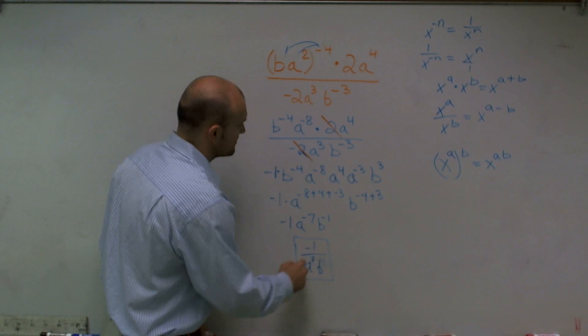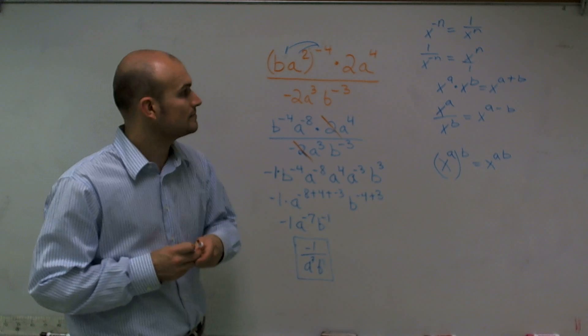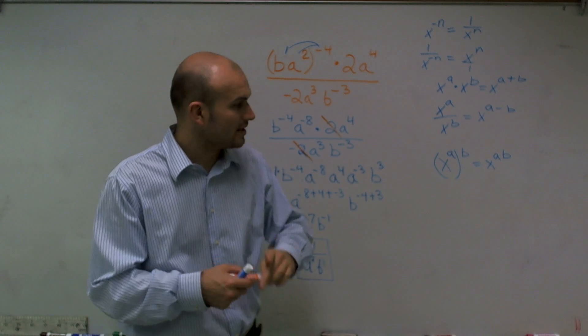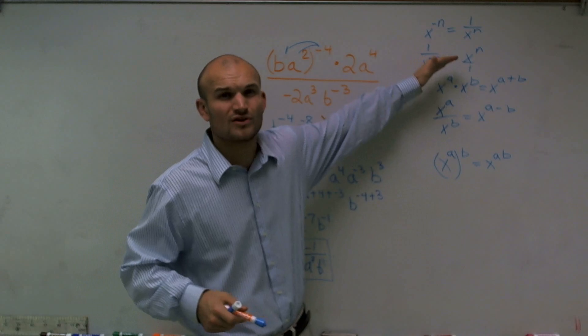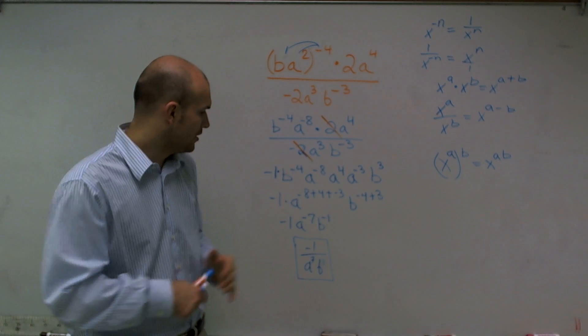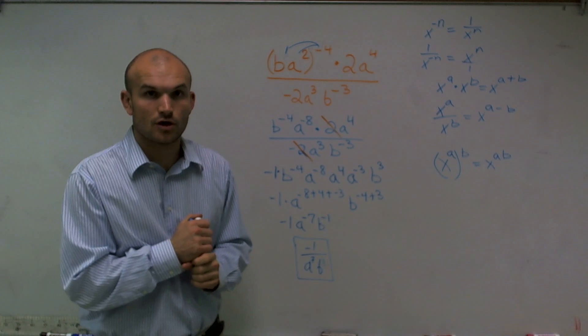So that is how you simplify. It's much easier to make sure you put them all in the same line and then use adding and multiplication. But the most important thing is you understand these rules and where to apply them. There's multiple ways to get to my exact same answer, which is negative 1 over a to the 7th b. Thank you.